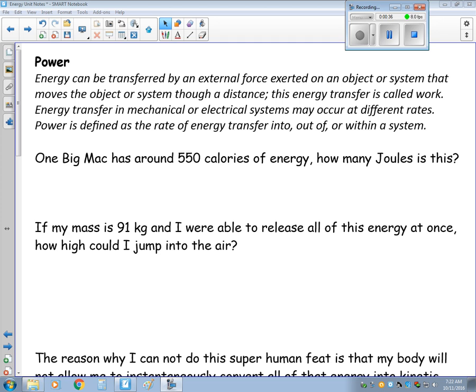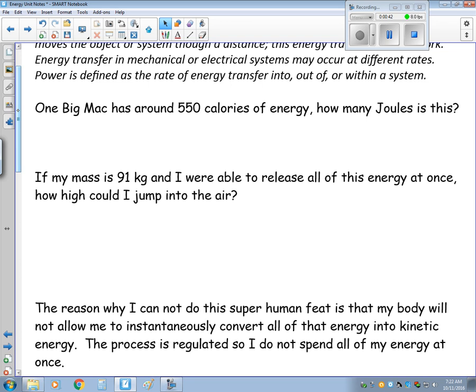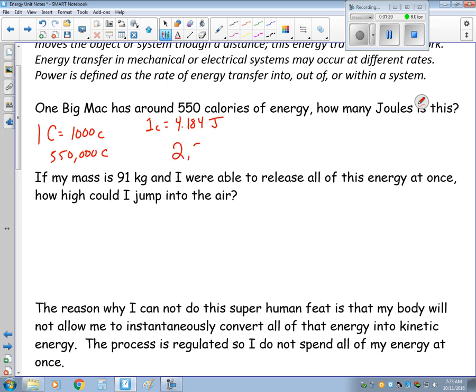To help you understand this, let's start with a Big Mac. Kind of a weird place to start, but one Big Mac has 550 calories and we kind of wonder how many joules is this? Well first off, one food calorie equals 1000 science calories. So really this Big Mac is 550,000 science calories. One science calorie equals 4.184 joules. So really this Big Mac has over 2 million joules of energy.